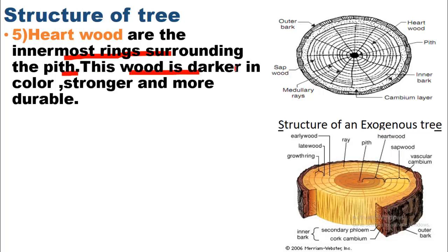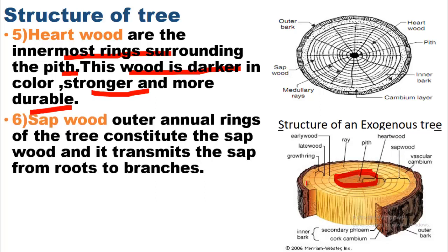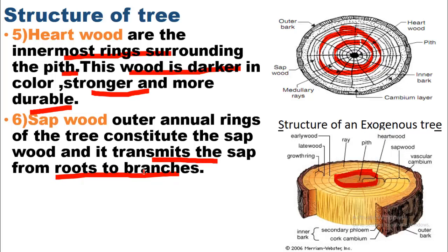Heartwood refers to the innermost rings surrounding the pith. This wood is darker in color, stronger, and more durable. As you can see in the picture, the rings residing closer to the pith are called heartwood. Sapwood consists of the outer annual rings of the tree; it transmits sap from the roots to the branches. The rings outside the heartwood are called sapwood.